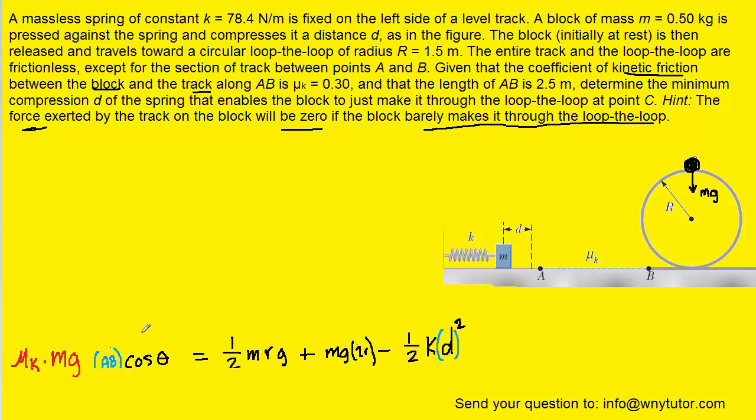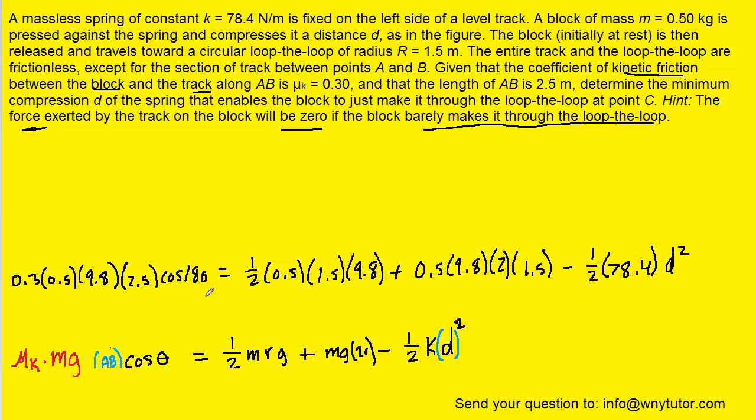Now we'll go ahead and plug in the known values. Notice again the angle for the cosine was 180 degrees. Why don't we process this on our calculator, this, as well as this. We could even multiply the 1 half by 78.4. We can add these two like terms and then subtract that result over to the other side.